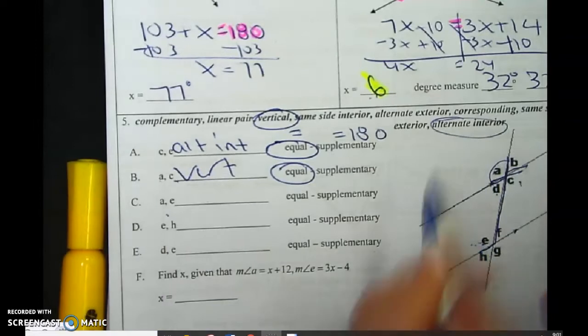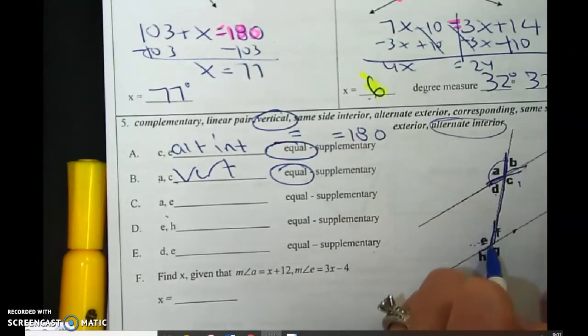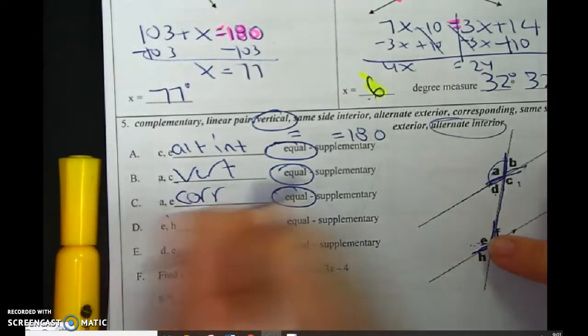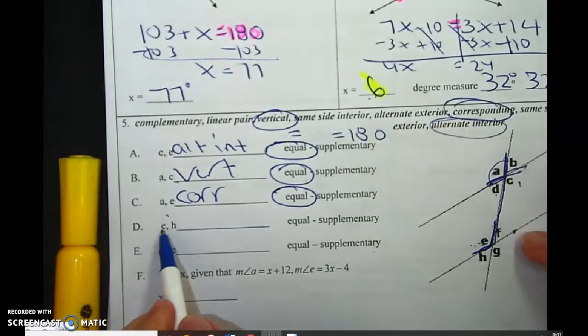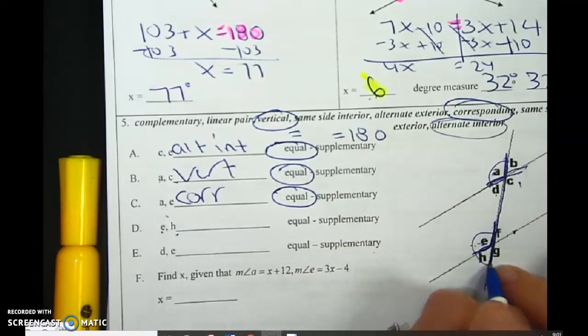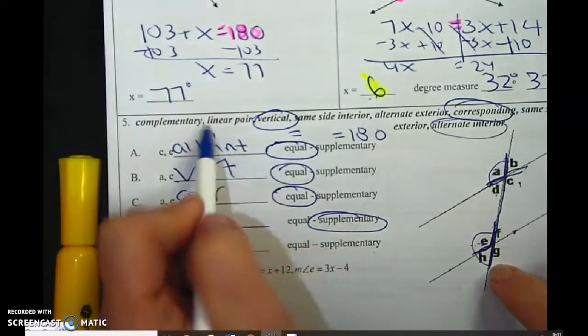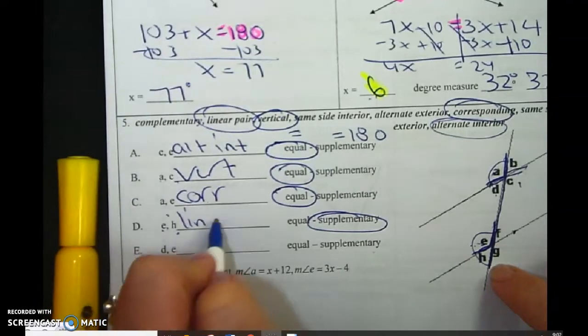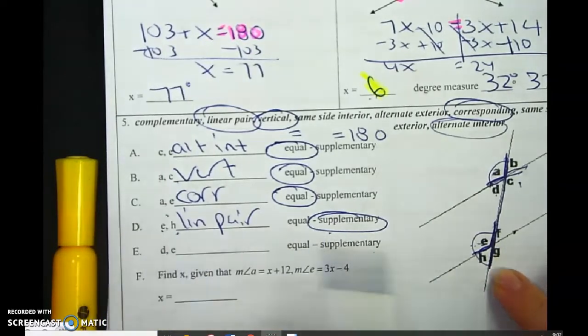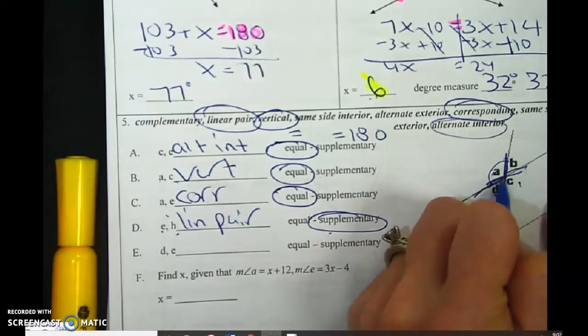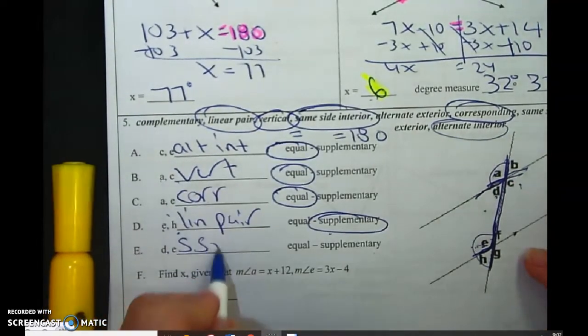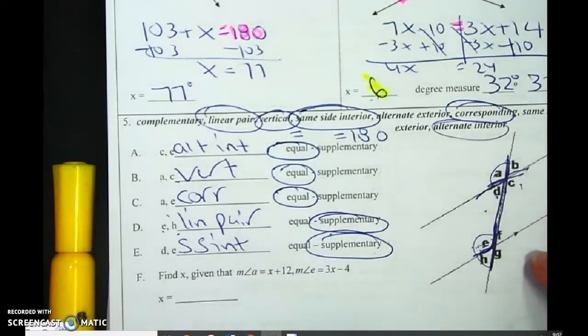A and E. This is top left, and this is top left. They are corresponding. They are in the same place. And they are equal. It's E and H. So E and H are right next to each other, and it looks like they form a line. That means they equal 180 degrees. It looks like it would be a linear pair. You could also say that is supplementary. And then D and E, they're on the same side and they're on the inside. Same side interior. And that means they're supplementary.